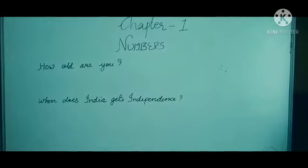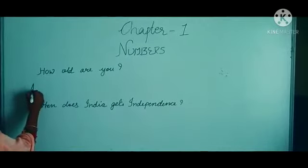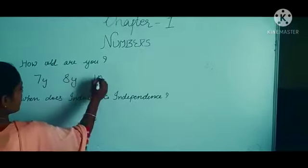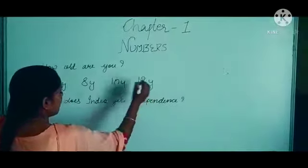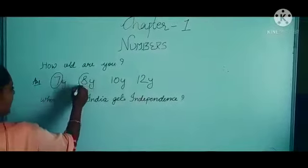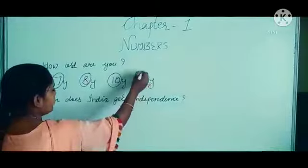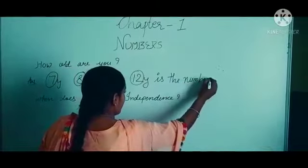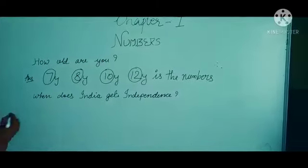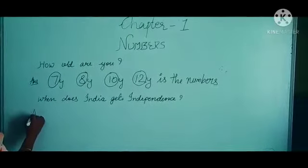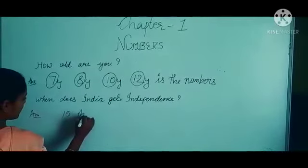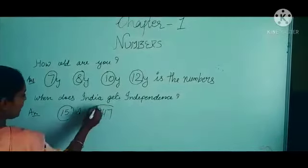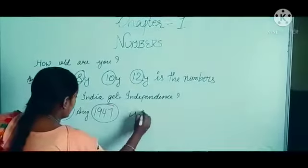If some person asks you how old are you, then your answer will be 7 years old, 8 years old, 10 years old, or 12 years old. Then 7, 8, 10, 12 is the number. If some person asks you when does India get independence, then your answer will be 15 August 1947. So 15 and 1947 are numbers.